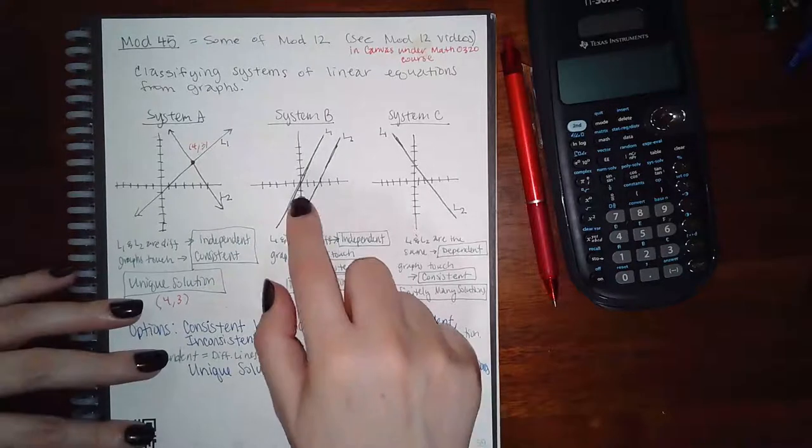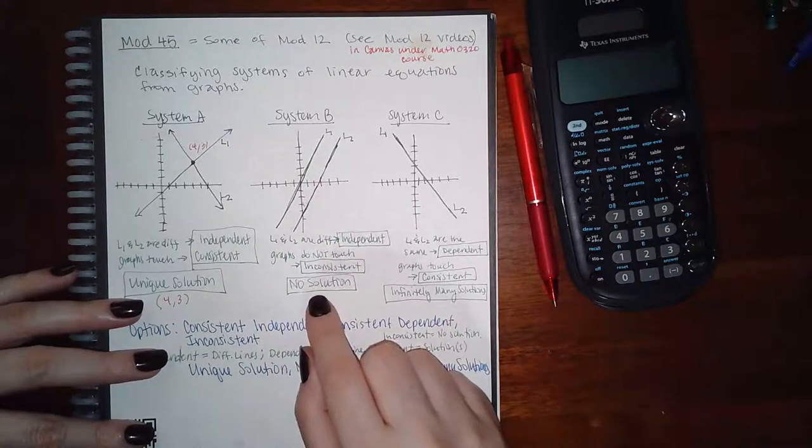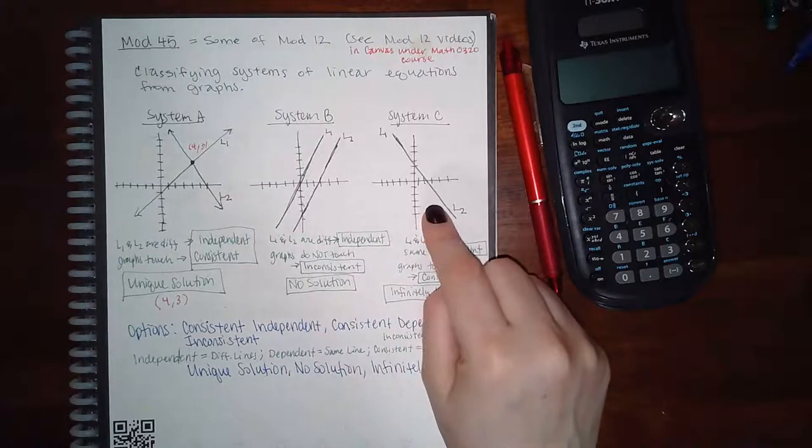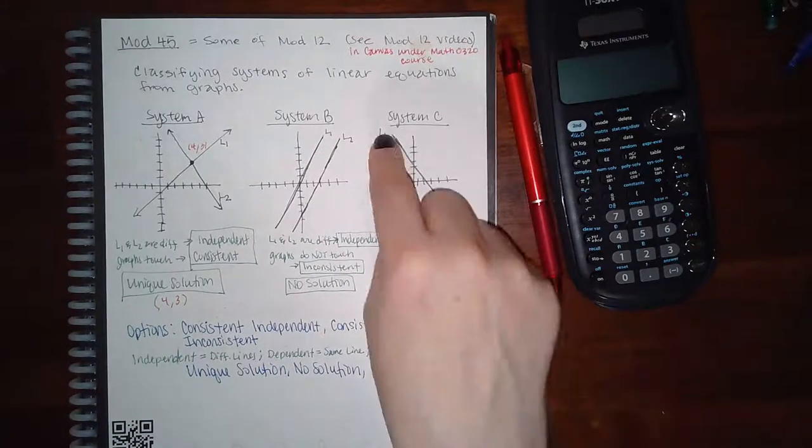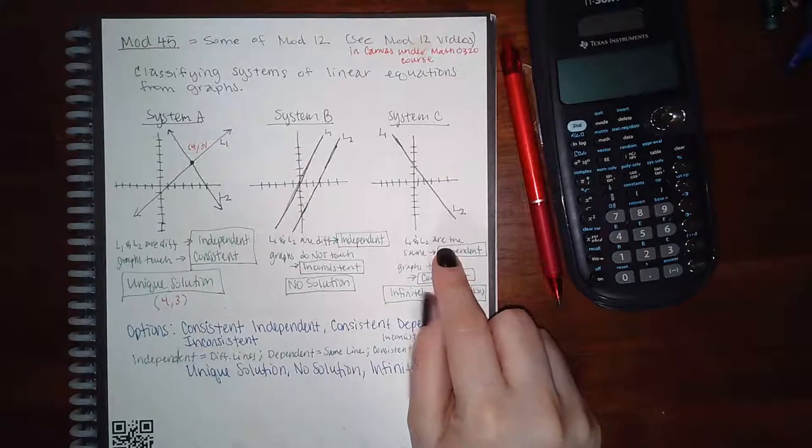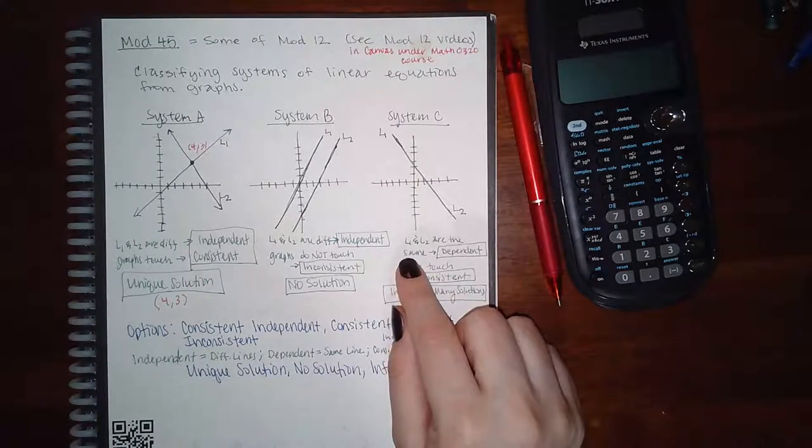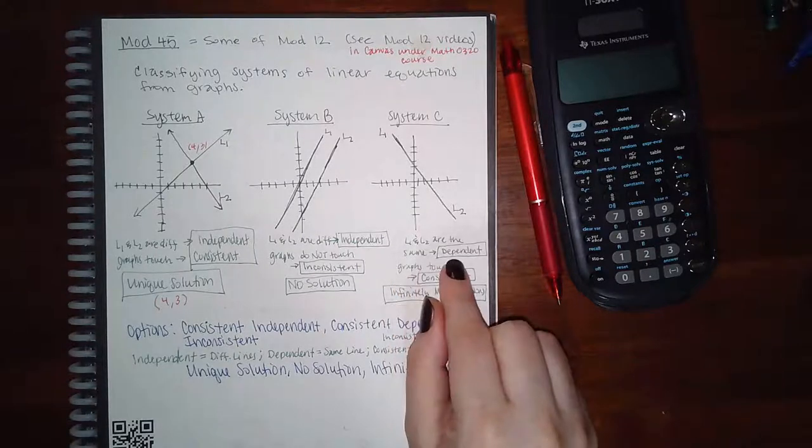And since the graphs never touch, there is no solution at all. So you would tell them there is no solution. For System C, you have L1 and L2 right on top of each other.